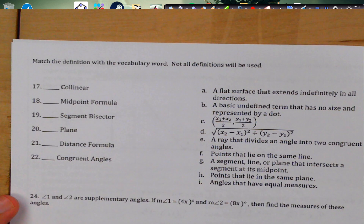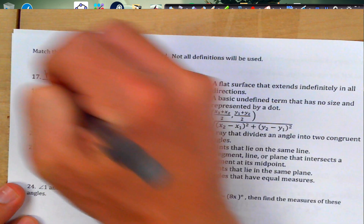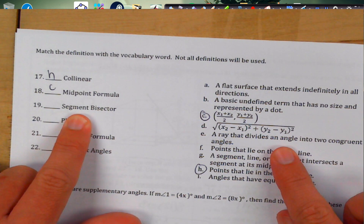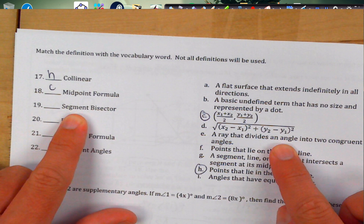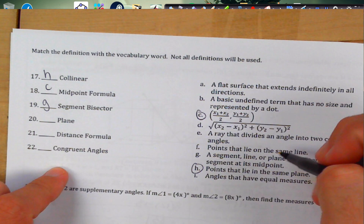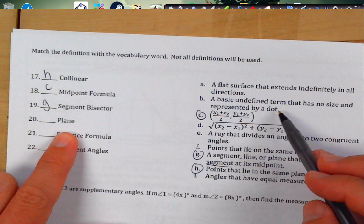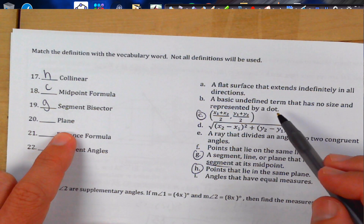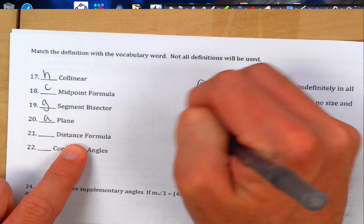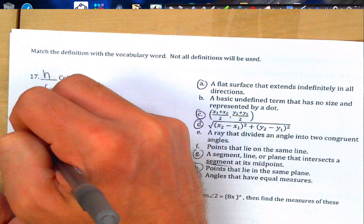Back page: Collinear points lie on the same line; coplanar points lie on the same plane. Midpoint formula — there it is. A ray that divides an angle into two congruent parts is an angle bisector (not a segment bisector). A segment, line, or plane that intersects a segment at its midpoint is a segment bisector. A basic undefined term with no size represented by a dot is a point. A flat surface extending indefinitely in all directions is a plane. Distance formula — easy one.